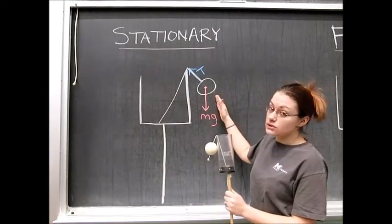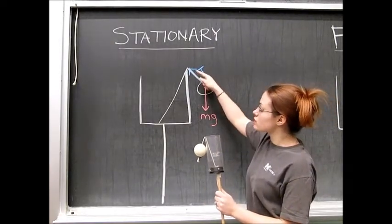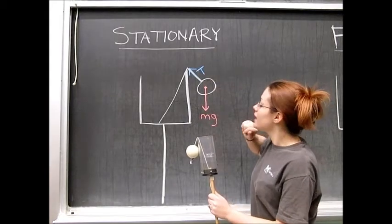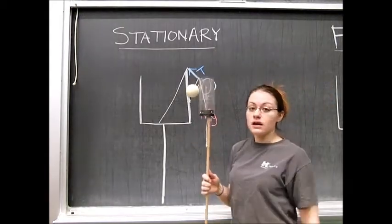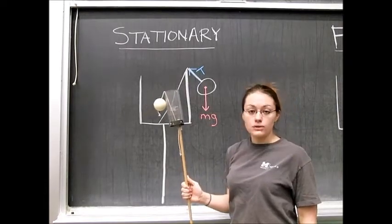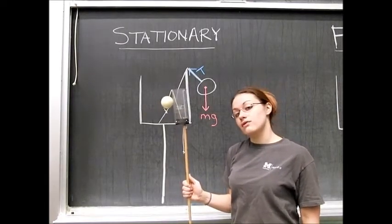In the stationary situation, the tension in the string is counterbalanced by the weight of the ball, and therefore it will hang there unopposed until an outside force acts upon it.